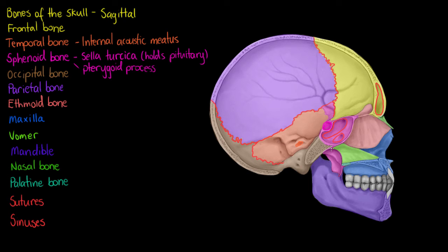And the second feature of our sphenoid bone that we can see exclusively on the interior here is our pterygoid process. So the pterygoid process right here.